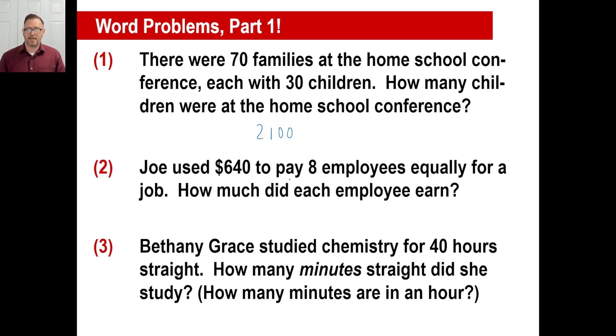Joe used $640 to pay eight employees equally. How much did each employee earn? Well, one zero minus no zeros is one zero. 64 divided by eight is 80, 80 bucks each.